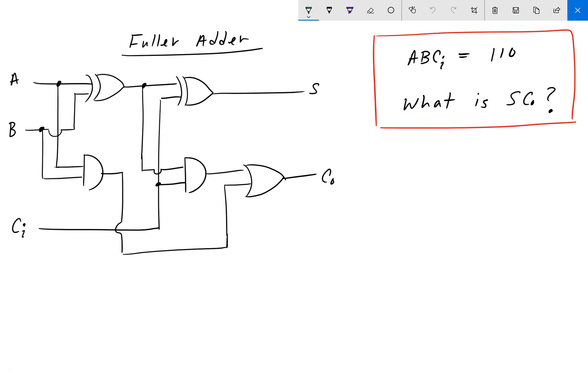So A, B, C_I is equal to 1, 1, 0. What is S, C_O?